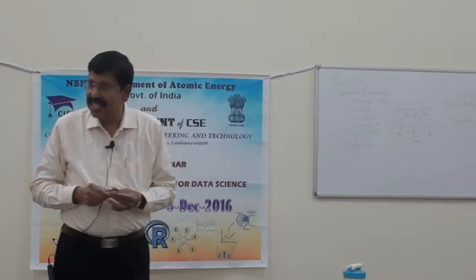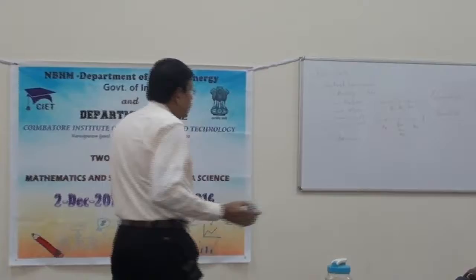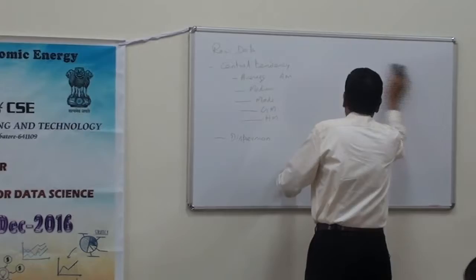Deciles divide into 10 equal parts, octiles into 8 equal parts, quartiles into 4 equal parts. This is the overview of positional averages. So this is about the average.